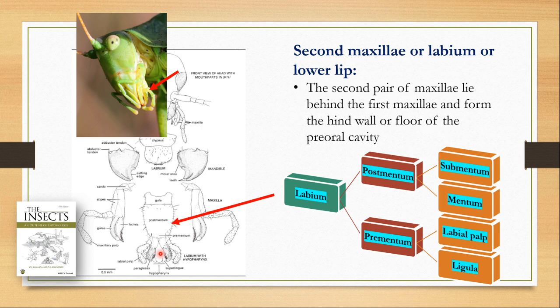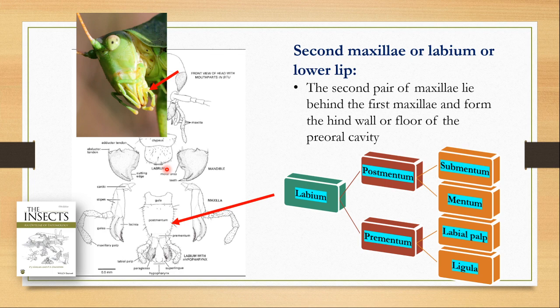Together, the glossa and paraglossa form the ligula. The function of the maxillae and the lower lip is to hold the food, while the mandibles bite and chew the food. This is how the biting and chewing mouthparts work. This is the simplest type of mouthpart, and all the different mouthparts discussed from this point onwards are actually modifications of these parts — in some, certain parts are vestigial or reduced, and some parts are elongated or broadened.